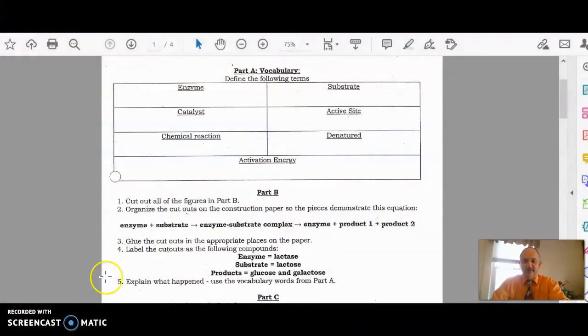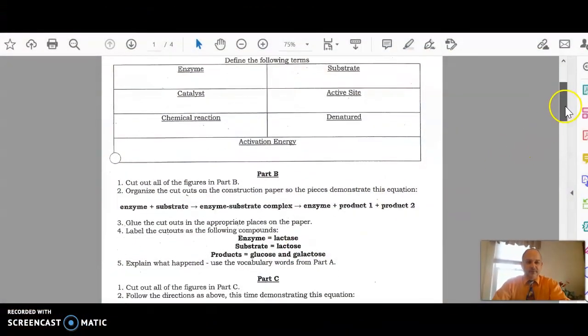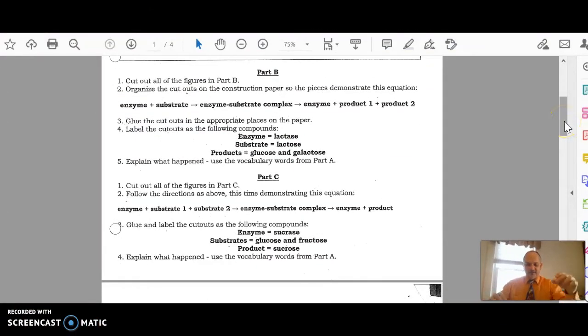That's how you do the first part and the second part, well, part A and part B of the enzyme cutout activity. It's similar for part C. You're going to cut out all the figures for part C if you haven't done so already. And you're going to set them up similarly. You're going to follow the directions. It tells you this time it's going to be enzyme plus substrate 1 plus substrate 2 produces enzyme substrate complex, which produces enzyme plus product. Then you're going to label everything and explain what happened.